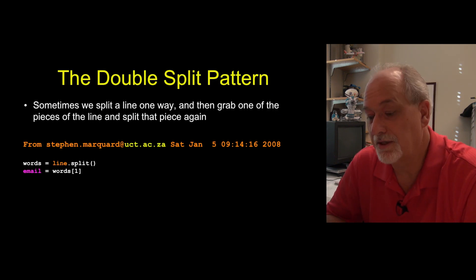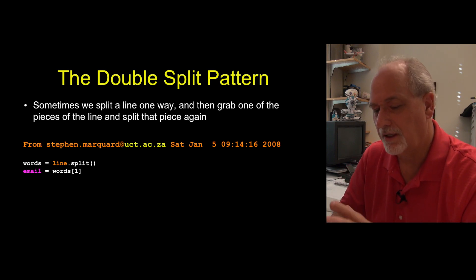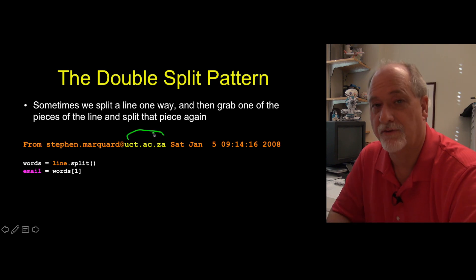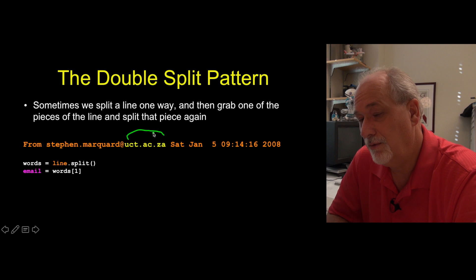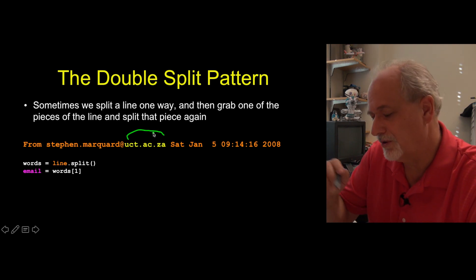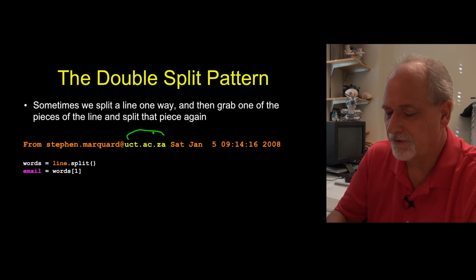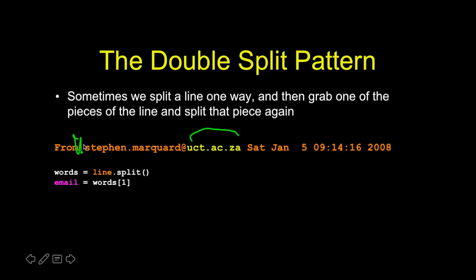Now sometimes we want to dig into it deeper, and we will take something, split it, and then split another piece of it again with a different delimiter. And so let's just say that the thing that we want to achieve is getting the part after the at sign for email addresses. And we did this with, again, find and pose and stuff like that. But you can use split to do this as well. So the first thing we're going to do is we're going to take this line. We're going to split it based on spaces.